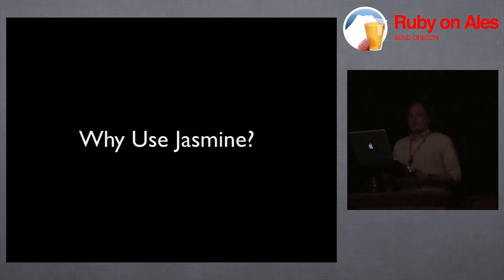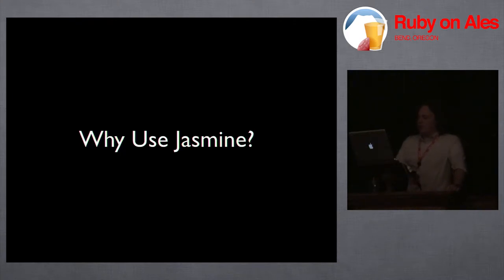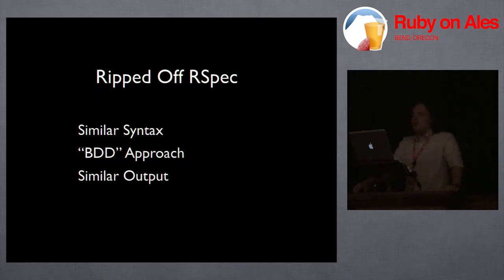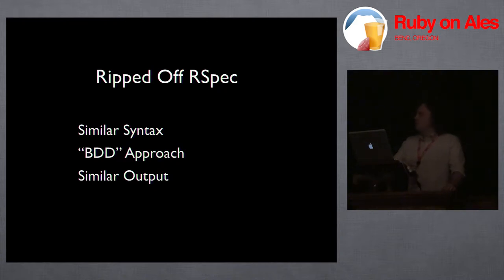So why do we actually want to use Jasmine? There are a lot of JavaScript frameworks out there — good ones too: FuncUnit, ScrewUnit, Blue Ridge, and a series of others. What is it about Jasmine specifically? One of the biggest things is that if you're already familiar with RSpec, you're already familiar with Jasmine, because they flat out ripped off RSpec — and it's a great thing they did. They both have very similar syntax, both take that BDD approach to describing object behavior, and end up with very similar output that doubles as documentation.